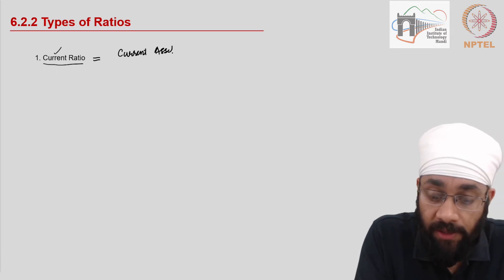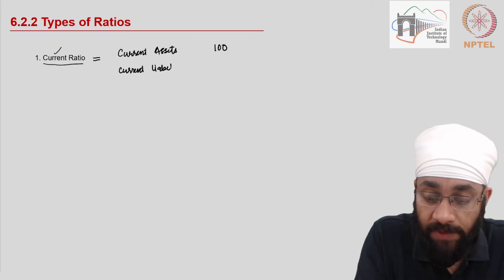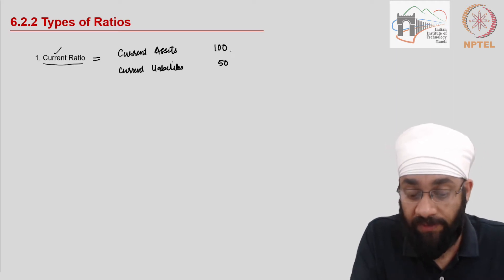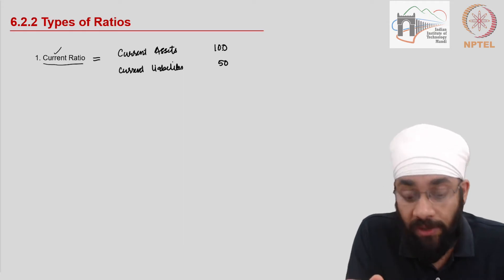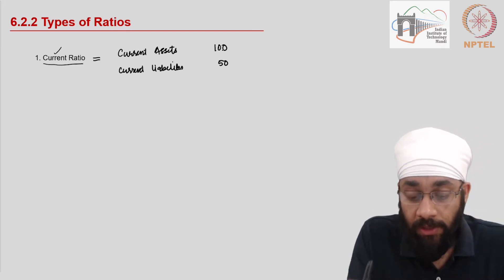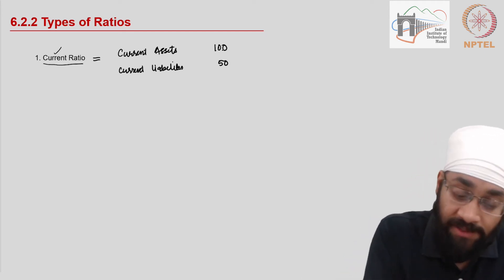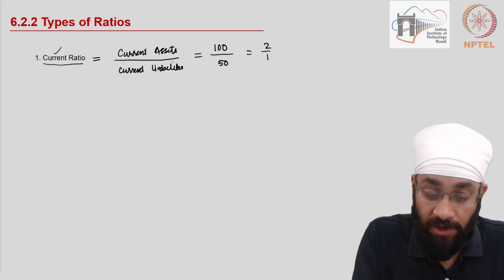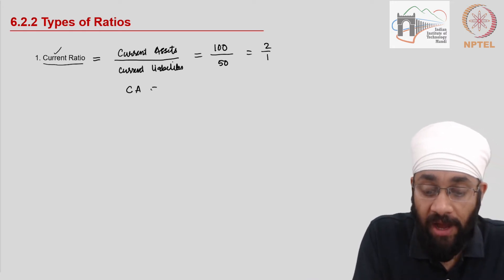So what kind of understanding are we expecting to arrive at? If the current assets of a business are 100 and the current liabilities are 50, that means the business will have to pay 50 out of the 100 it will recover in the next one year. Current assets mean you will have this much cash in the next one year, and current liabilities mean you'll have to pay this much. So current assets are double the current liabilities, giving us a 2:1 ratio.